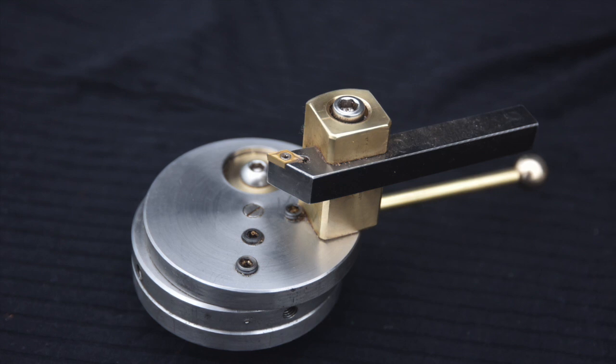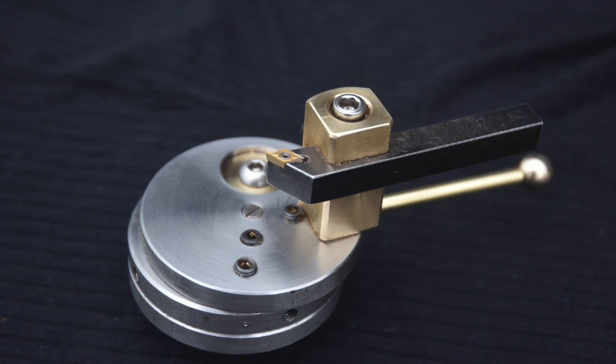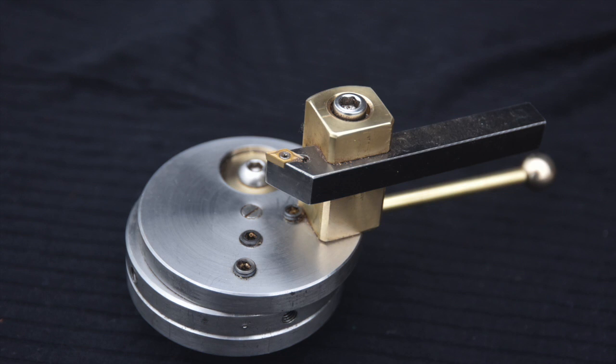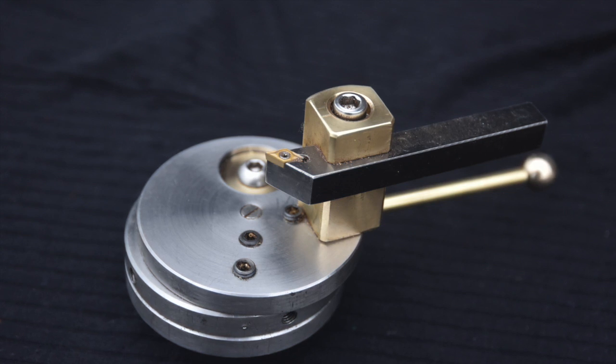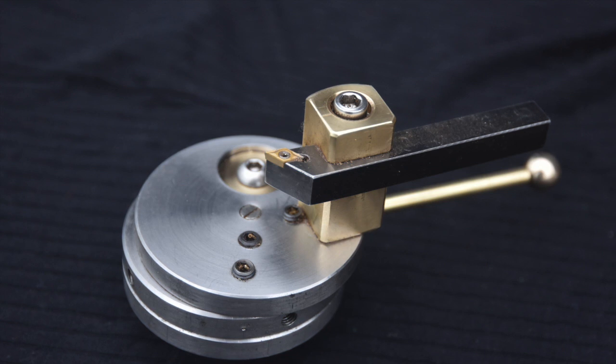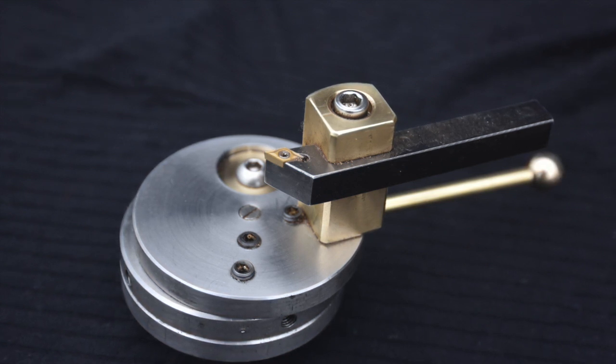Conventional ball turners have a miniature compound slide mounted on top. They require a dovetail slot and a fitting part that fits into the dovetail, as well as gib plates, adjusting screws, lead screw and handle. All of that is quite complex, requires a lot of machining to make, and generally requires a milling machine.